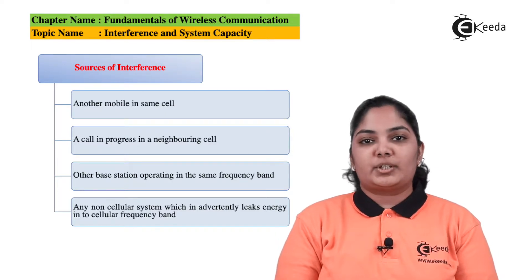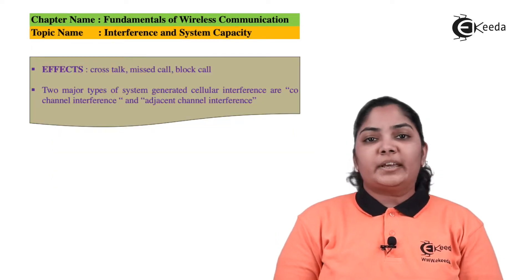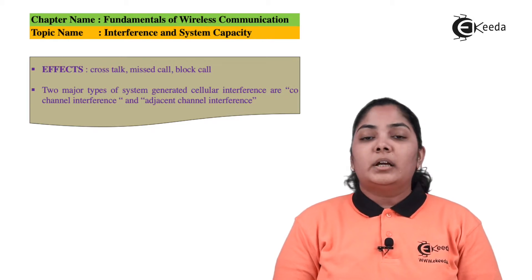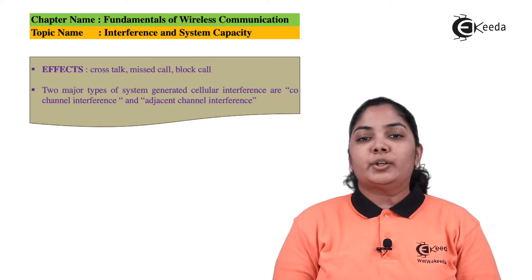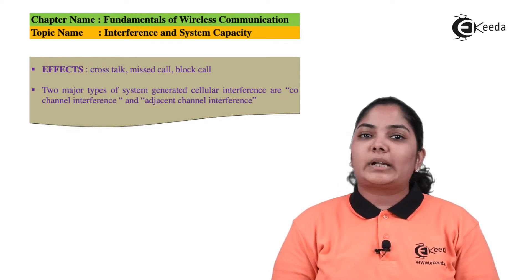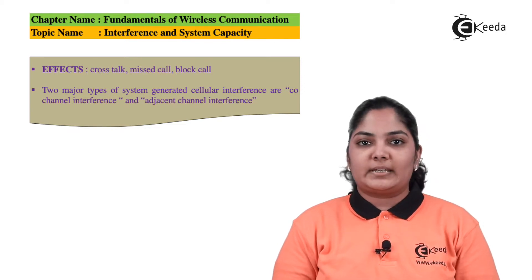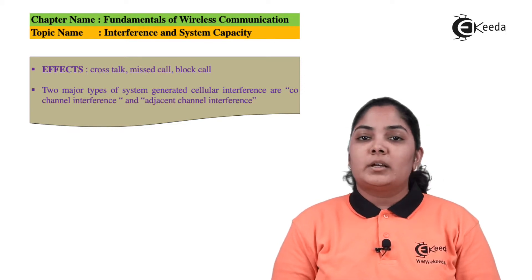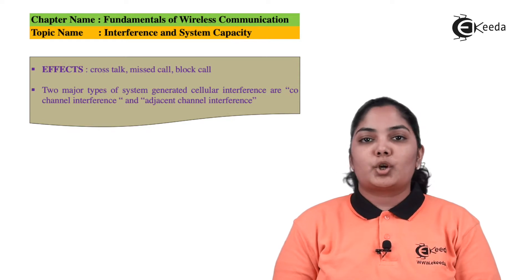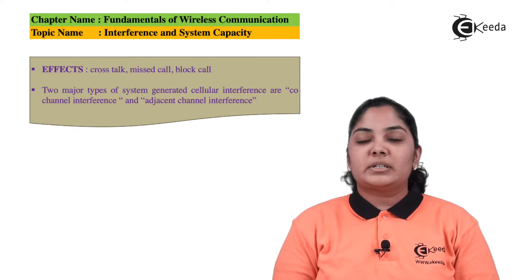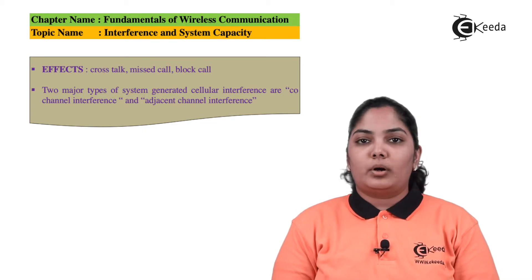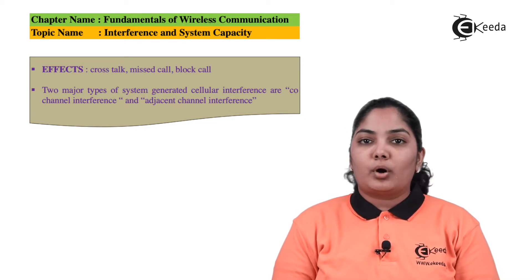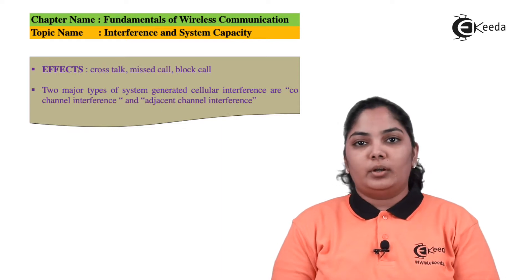The effects of these interferences could be crosstalk — say we are using certain frequencies and some other person is also using the same set of frequencies in the same cell, so there are high chances we can listen to conversations of another person. There may also be missed calls, call drops, or blocking of a call due to channel unavailability.